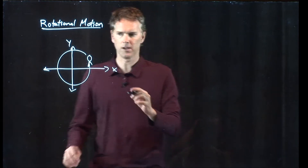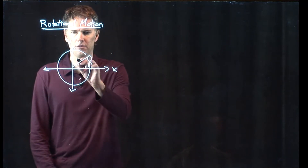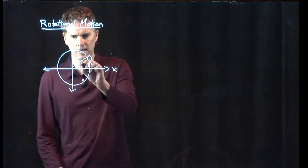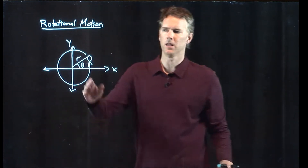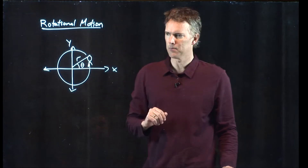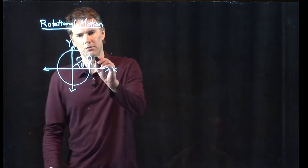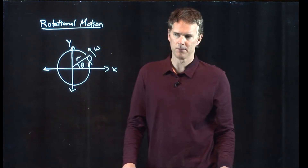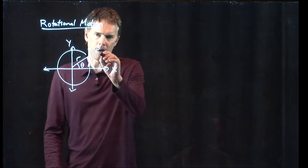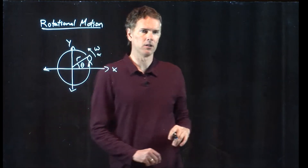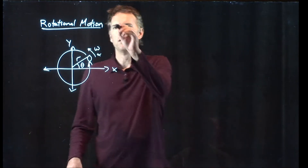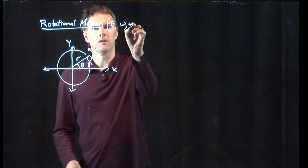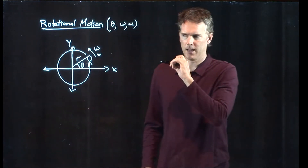We can define a few things to characterize that circle: the radius r of the circle, the angle theta between the line to the object and the x-axis. We can also talk about the angular speed omega of the object and alpha, the angular acceleration. These are the important variables: theta, omega, and alpha.